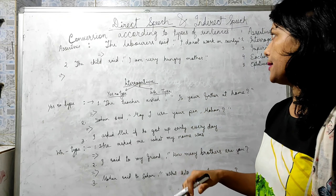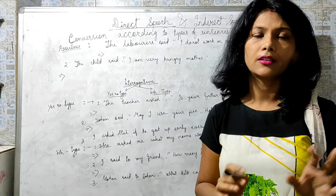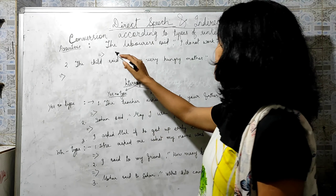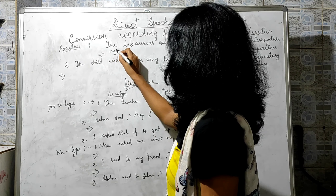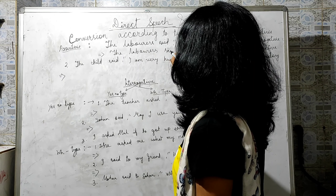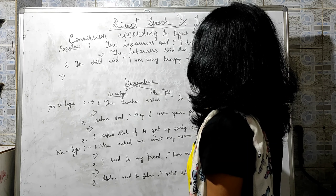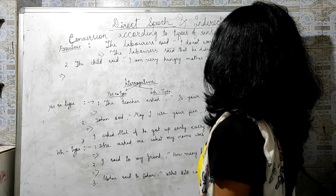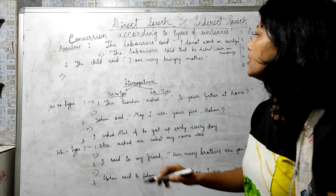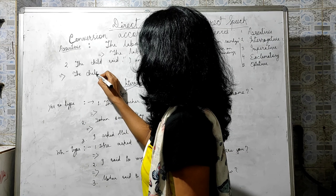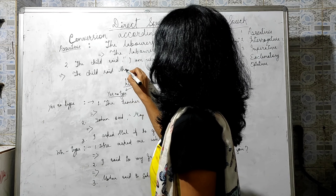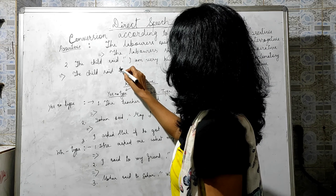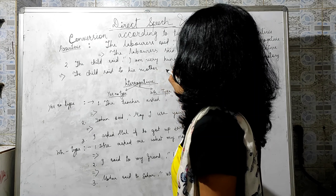For assertive sentences, all the rules are the same as learned in part one. Example: 'The laborers say I do not work on Sunday' becomes 'The laborers say that they did not work on Sundays.' Another example: 'The child said I am very hungry, mother' becomes 'The child said to his mother that he was very hungry.'